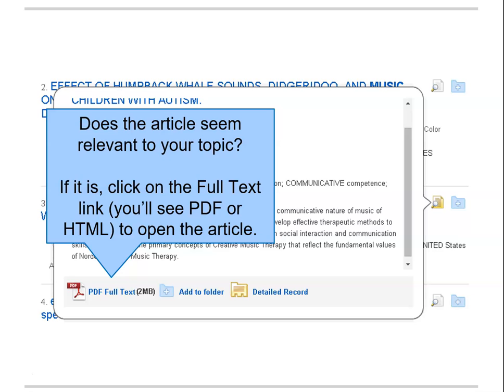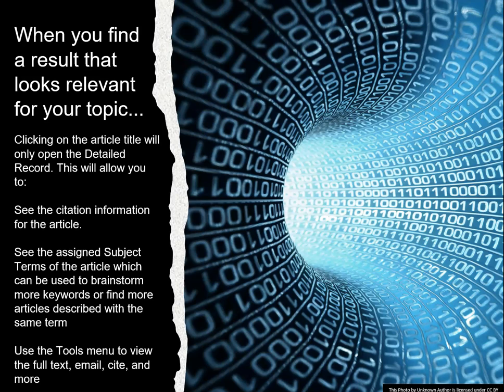If the article seems relevant to your topic and you want to read further, you can click on the HTML or PDF Full Text link in the pop-up box to access the full article. PDF files are like photocopies of the article from the journal pages, so if there are pictures or graphs, they'll be in the PDF file. When you find a result that looks relevant, click on the article title to open up the detailed record. This will allow you to see the proper assigned subject terms for the article and search using those terms. Open the full text of the article and use the tool palette to email or print the article.